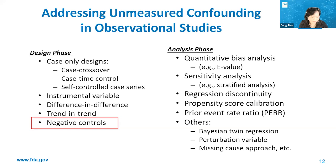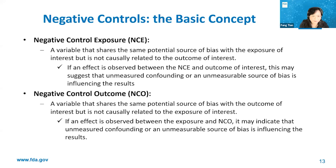In recent years, negative control methods have emerged as a useful tool to detect, reduce, and potentially correct for unmeasured confounding bias. There are two types of negative controls: the negative control exposure, referred to as NCE, and the negative control outcome, referred to as NCO. To understand the negative control, let's consider the causal diagram for unmeasured confounding bias. Here, we want to study the association between E, the exposure, and O, the outcome. U refers to unmeasured confounding bias, with arrows from U to both E and O.